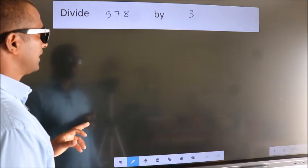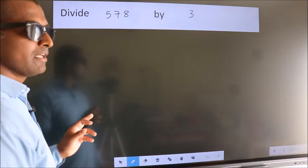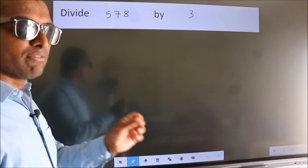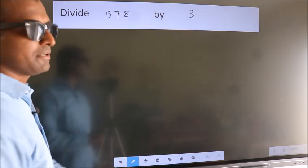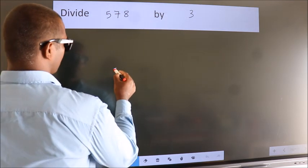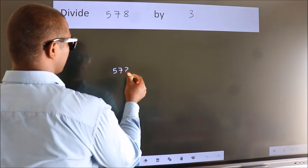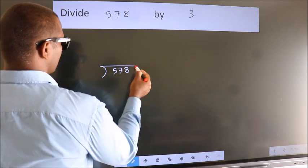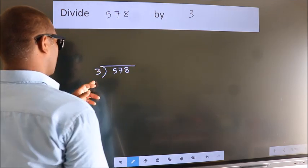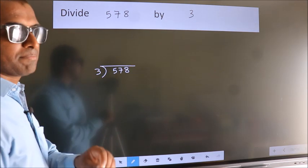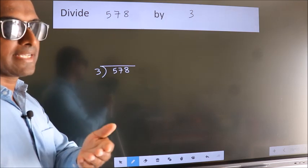Divide 578 by 3. To do this division, we should frame it in this way. 578 here, 3 here. This is your step 1.